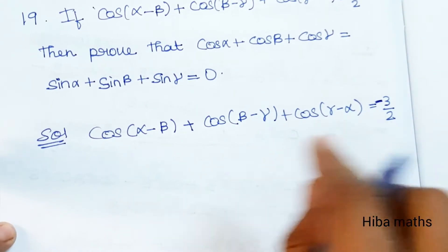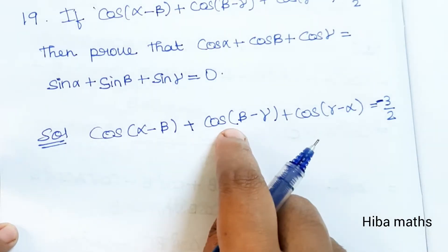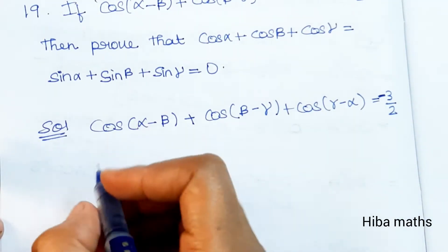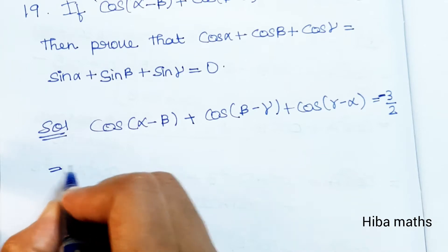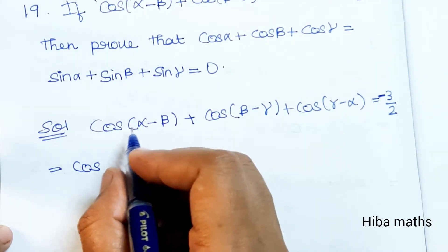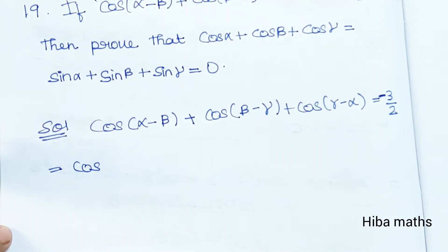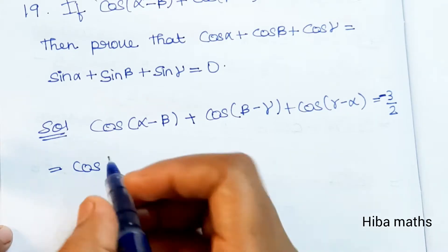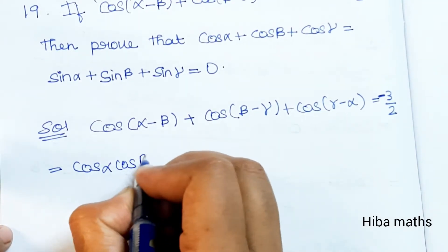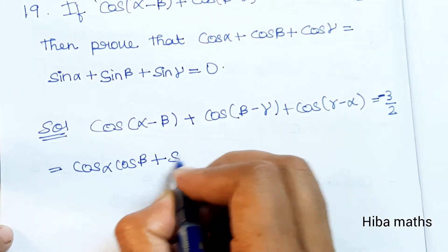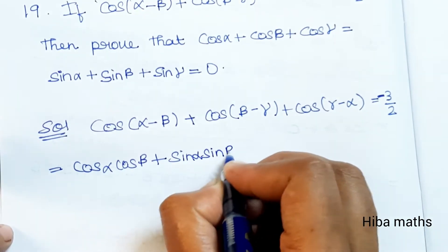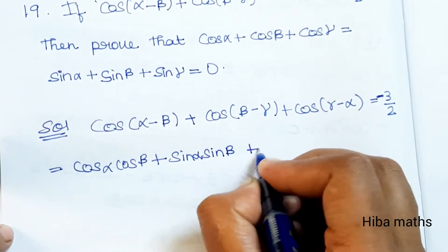First, we apply the cos(a - b) formula. The formula is: cos(a - b) = cos a cos b + sin a sin b.